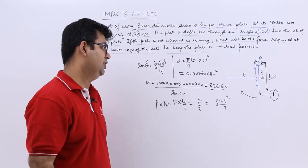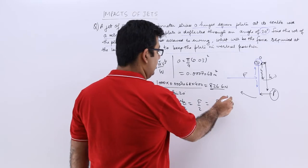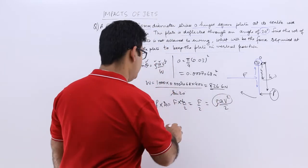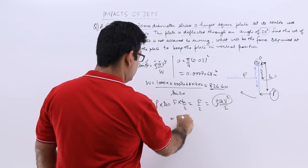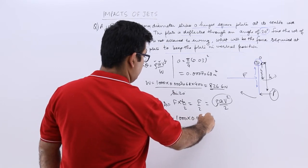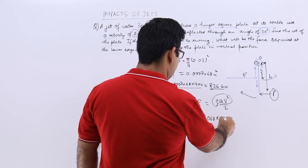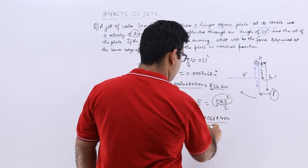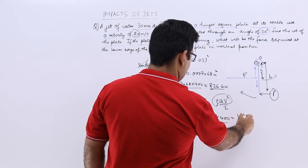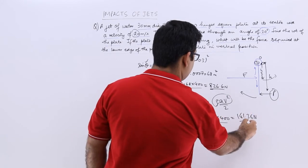The 2 is from this calculation; f is only this much. Let's put in the value. You will get 1000 into 0.0007068 into 400 upon 2. This will give you 141.36 Newtons.